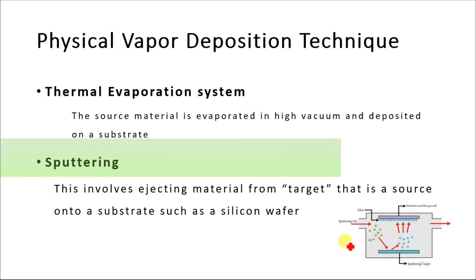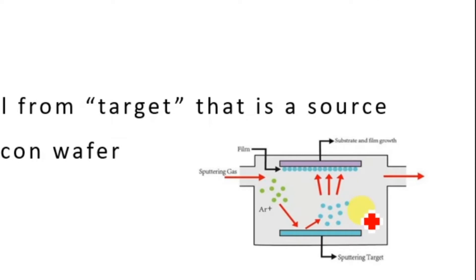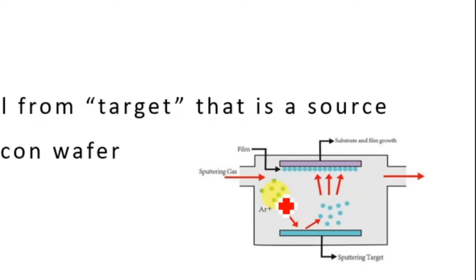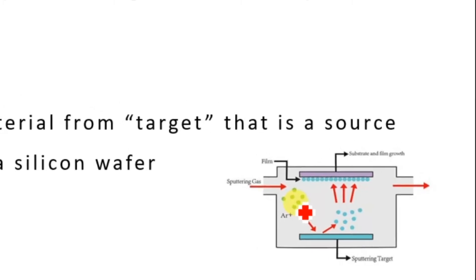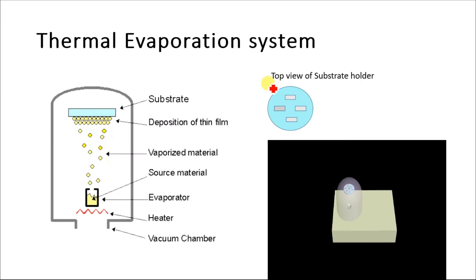Here you can see this diagram represents a sputtering system. This is the source material, this is the substrate, and the source material is bombarded with ions that eject this material, which is then deposited over the substrate.